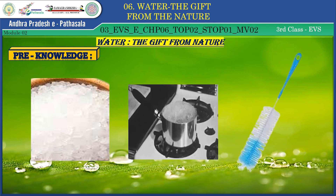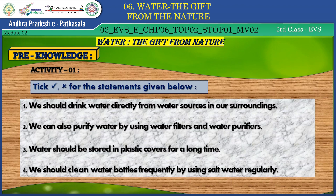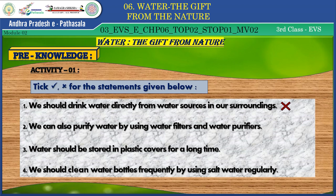Children, you have to do one activity. Here is the task — tick right or wrong for the following statements: We should drink water directly from water sources in our surroundings. We can purify water using water filters and purifiers. Water should be stored in plastic covers for a long time. We should clean water bottles frequently using salt water regularly. The first and third statements are wrong; the second and fourth are correct.